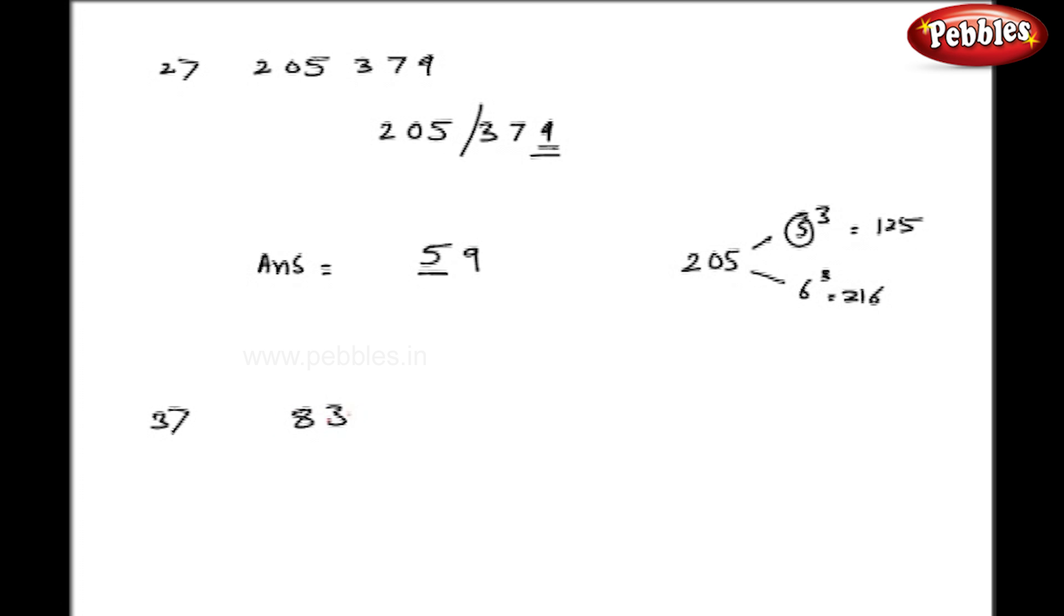Let us take one more example: 830584. Let us take two parts, the first part of three digits. So in my answer, my last digit will be 4 as per chart number 1 or 2. Now as a left part, 830 lies between the perfect cubes of 9 and 10, that is 729 and 1000. Always select smaller number, that is 9 in this case. So my answer is 94.